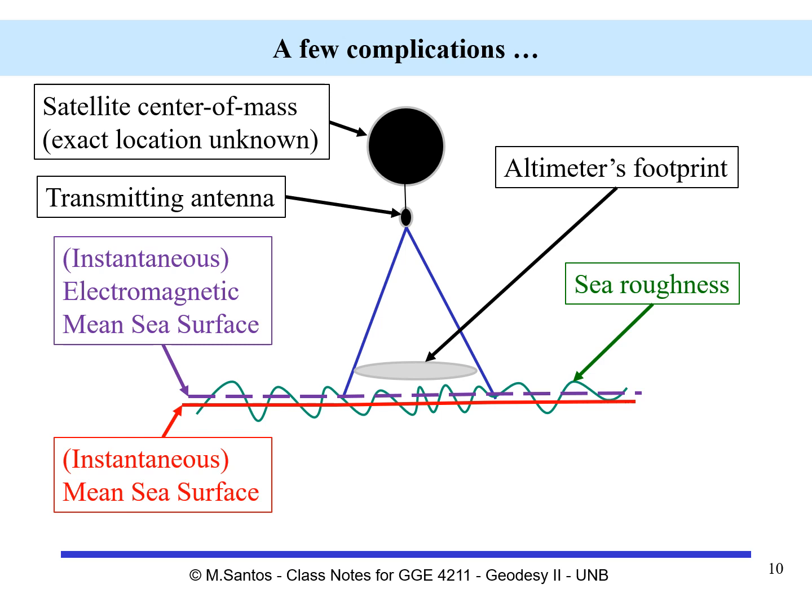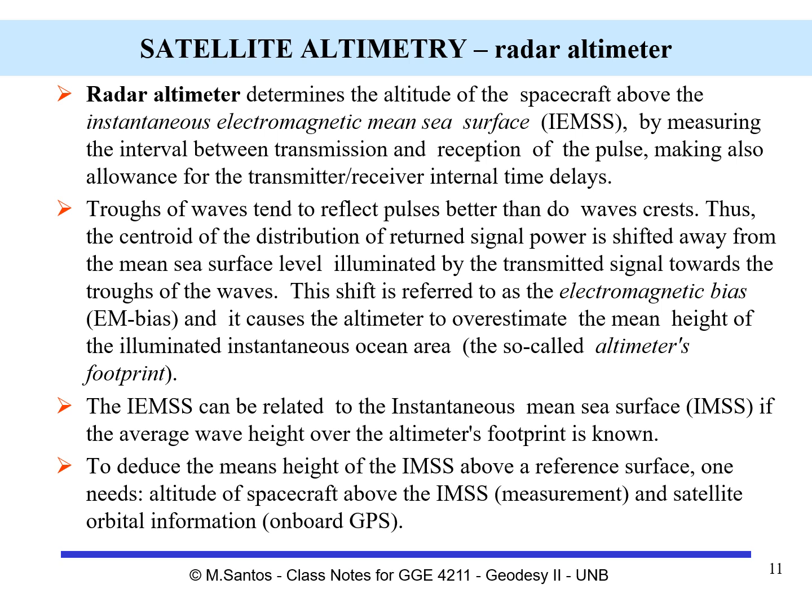The instantaneous electromagnetic mean sea surface can be related to the instantaneous mean sea surface if the average wave height over the altimeter's footprint is known. To deduce the mean height of the instantaneous mean sea surface above the reference surface, one needs the altitude of the spacecraft above the instantaneous mean sea surface and the satellite orbital information. The altitude corresponds to the measured vertical distance, and the satellite orbital information will come from onboard GNSS receivers.